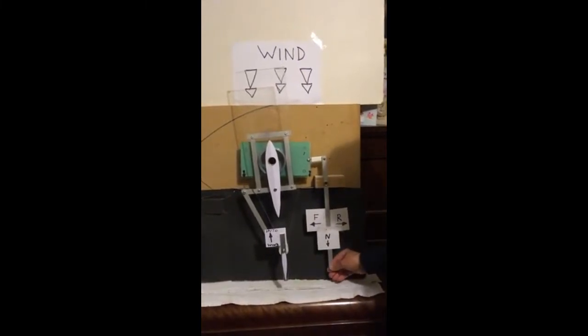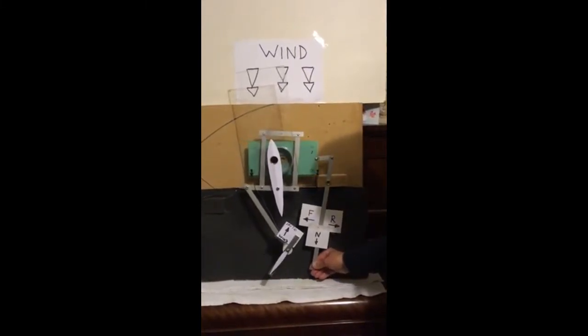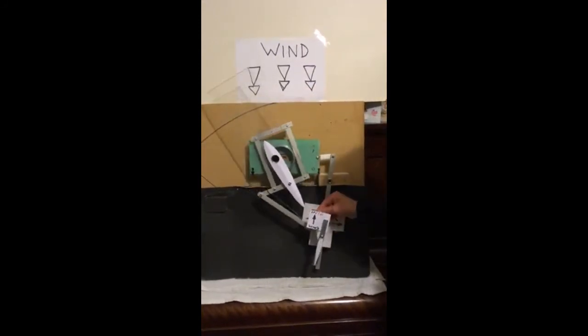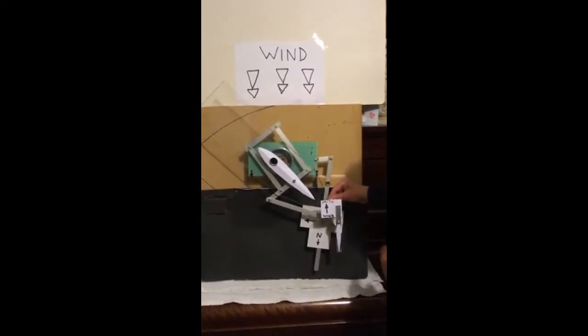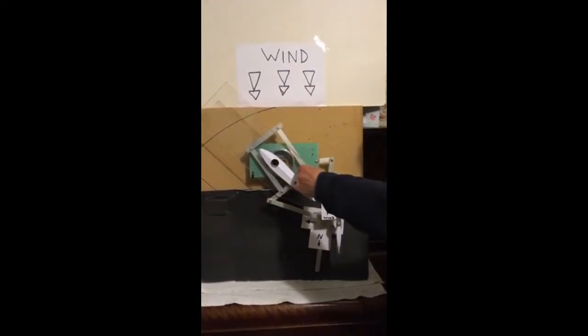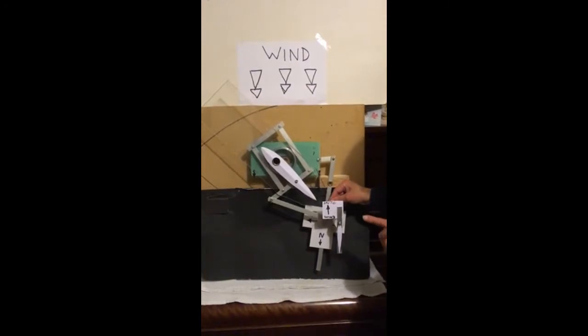Here we are moving it into the forward position. Here the plate comes round, pointing into wind. And now the wind comes down onto the wing, comes this way, propelling the boat forward.